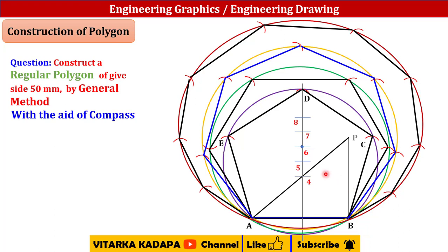In total, we have drawn a pentagon, hexagon, heptagon, and octagon. If you need a nonagon, locate point 9, take radius 9A, and draw the circle — the procedure is the same. This is the generalized method, which is commonly asked in exams.